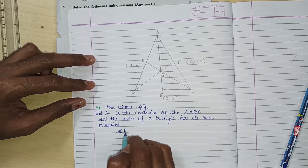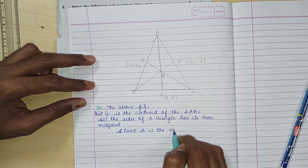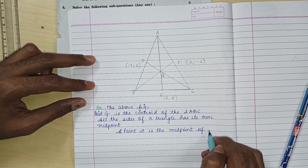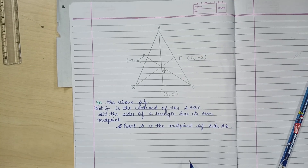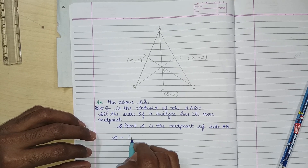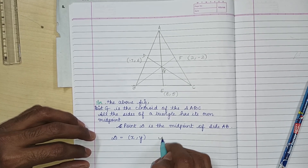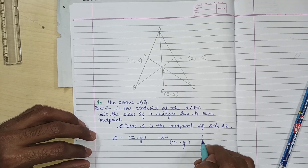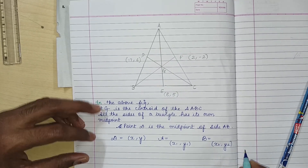Point D is the midpoint of side AB. Here we know that D equals (x, y), A is our (x1, y1), and B is our value (x2, y2). The coordinates of D are (−7, 6), so x = −7 and y = 6.